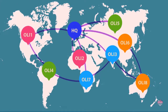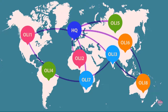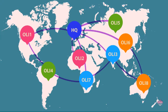This illustration shows us different colors representing different motives. For example, green can represent the resource-seeking motive, orange represents market-seeking, blue represents efficiency-seeking, and pink represents strategic asset-seeking.